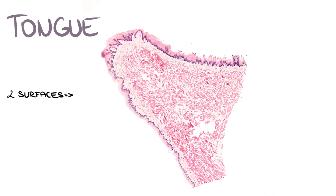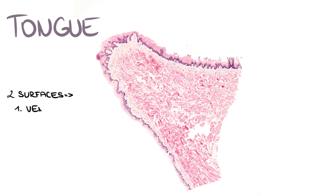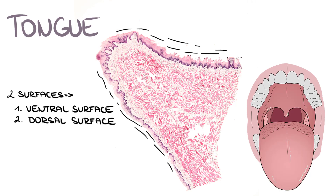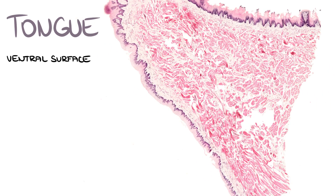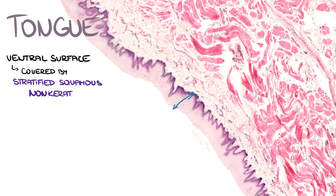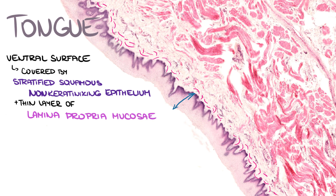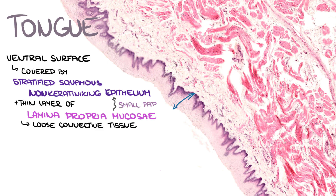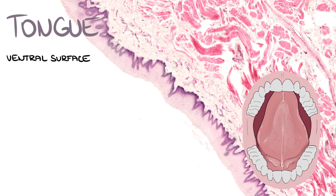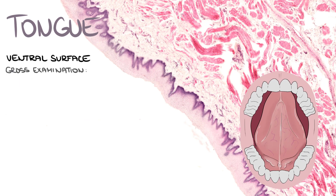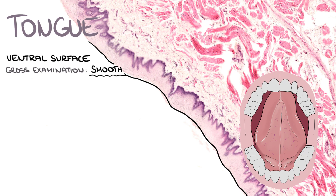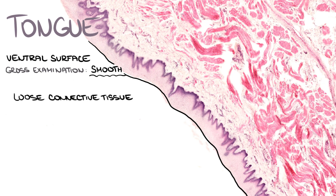There are two surfaces of the tongue: the ventral surface and the dorsal surface. The ventral surface is covered by a stratified squamous non-keratinizing epithelium with a thin layer of lamina propria mucosi consisting of loose connective tissue underneath. Lamina propria projects into the epithelium with small papillae. On gross examination, the ventral portion of the tongue is smooth. There is a layer of loose connective tissue located underneath the lamina propria,